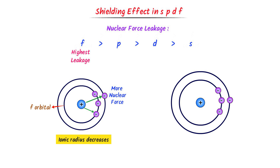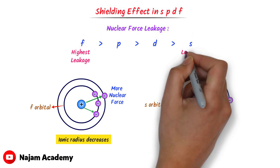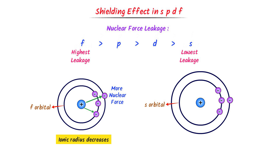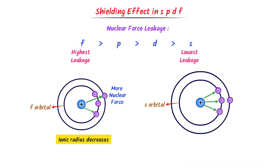In contrast, the nuclear force leakage of the S orbital is minimum, so no nuclear force leaks from the S orbital and the outer electron receives negligible nuclear force. As a result, atomic radius increases. Thus, the less the nuclear force leakage, the greater is the atomic radius or atomic size.